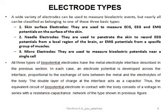All three types of biopotential electrodes have the same equivalent circuit. In each case the electrode potential is developed across the interface and it is proportional to the exchange of ions between the metal and electrolytes of the body. There is a double layer of charge at the interface which acts as a capacitor. Thus the equivalent circuit of this electrode consists of a voltage in series with a resistance-capacitance network.